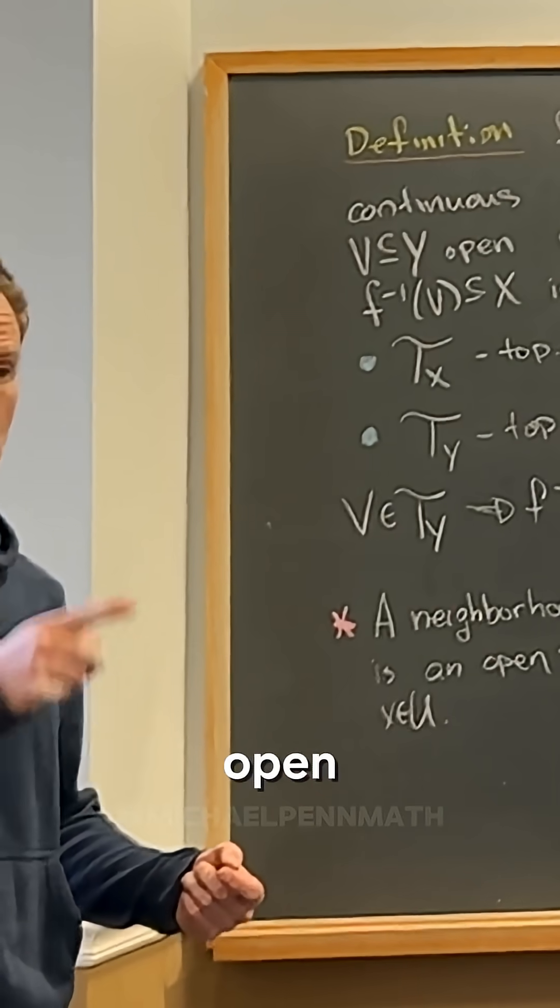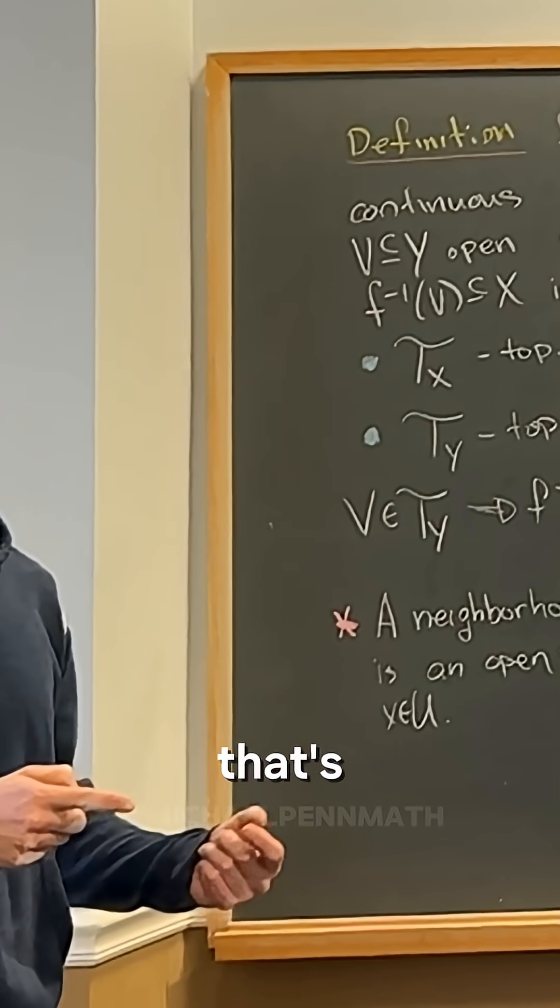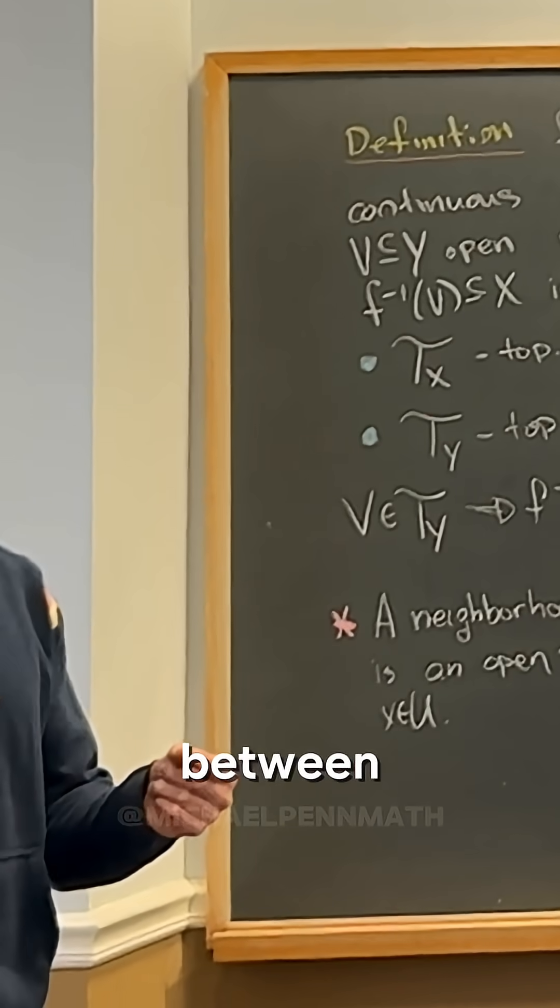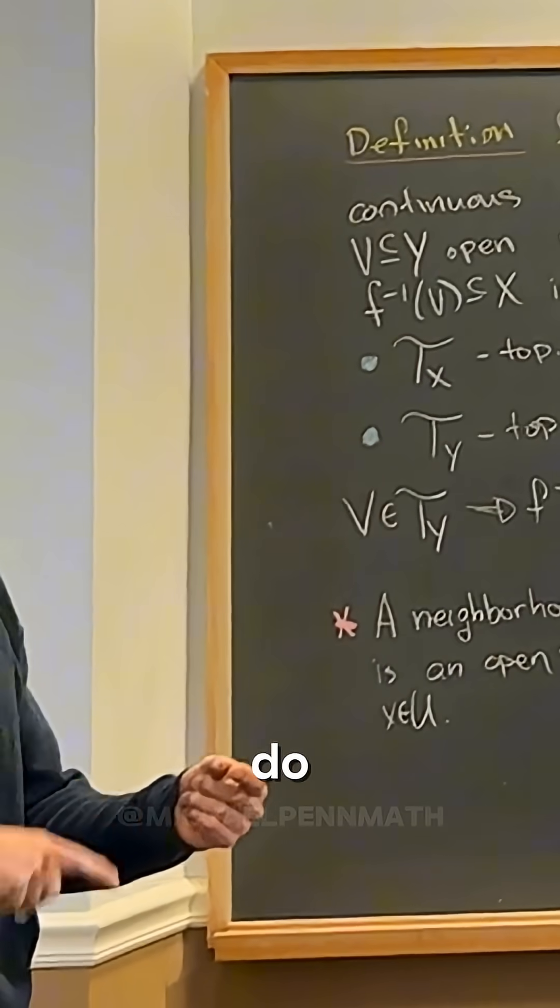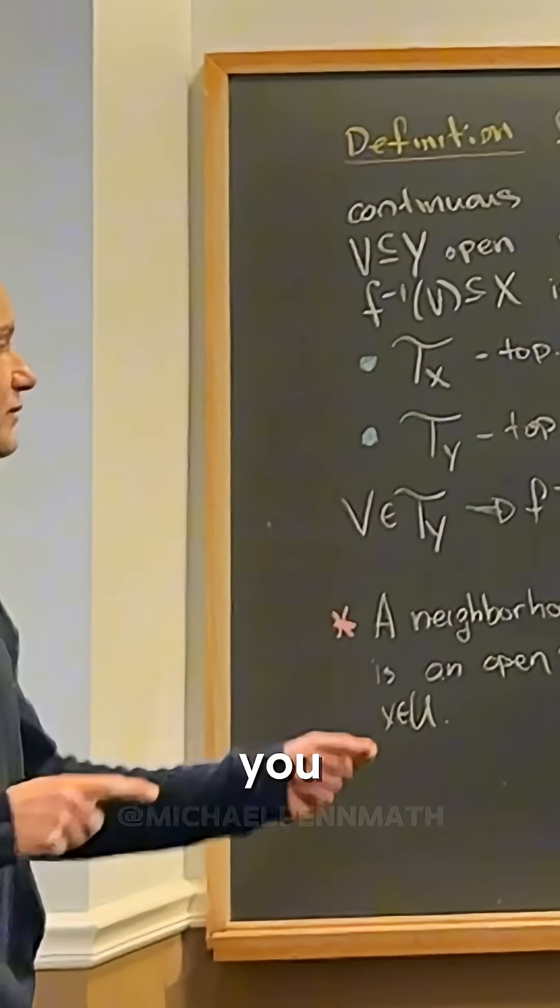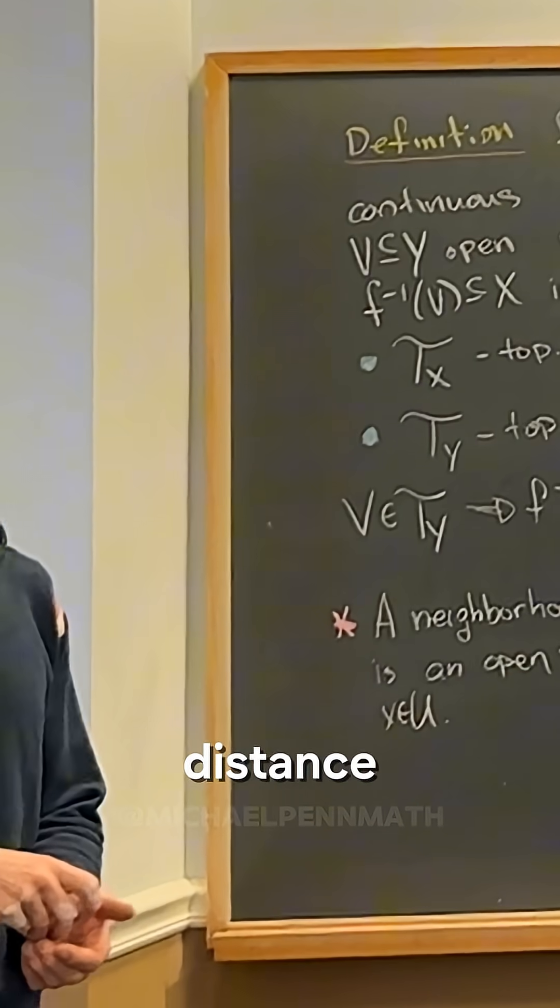But that's there. This is like what if there's no distance, right? If there's no measurement of distance between points, then you can't do this like bubble of a certain size. So you have to have this non-distance definition. This is the non-distance definition.